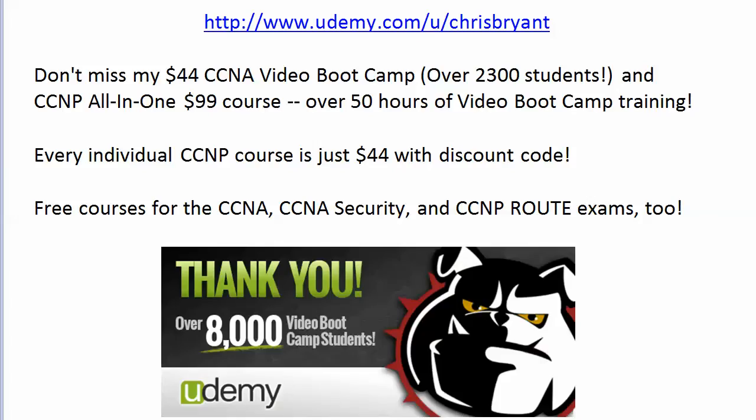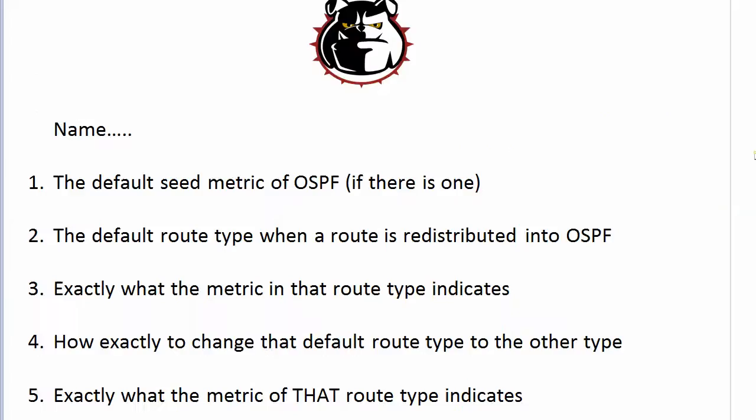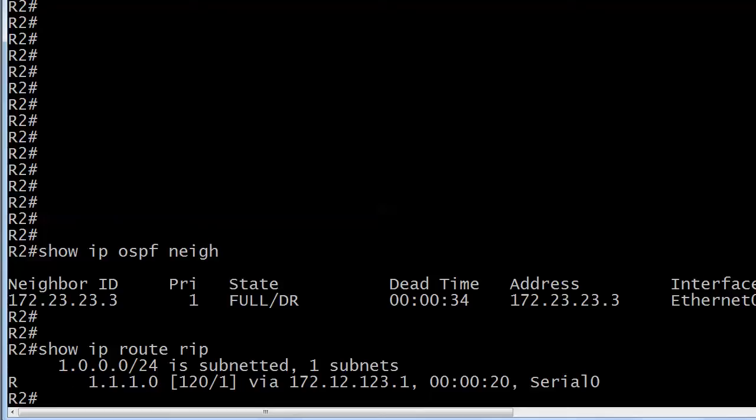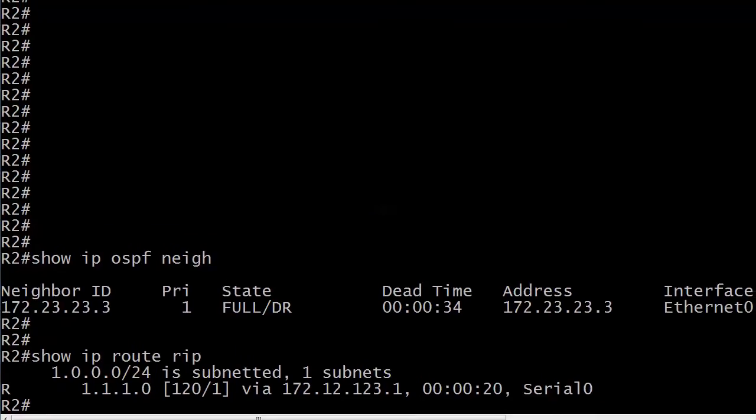Now let's get back to the routers and the questions. The first one: what is the default seed metric of OSPF if there is one? Well, there is one. Not every routing protocol has a seed metric for routes redistributed into it, but OSPF does, and it is 20. So what is the default route type when a route is redistributed into OSPF? Let's do a little redistribution and we'll actually see that seed metric and a couple of other values in action.